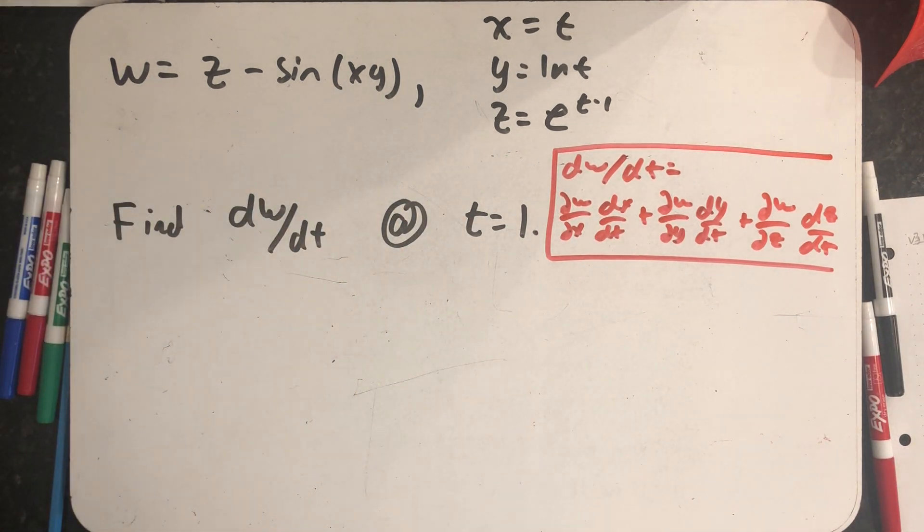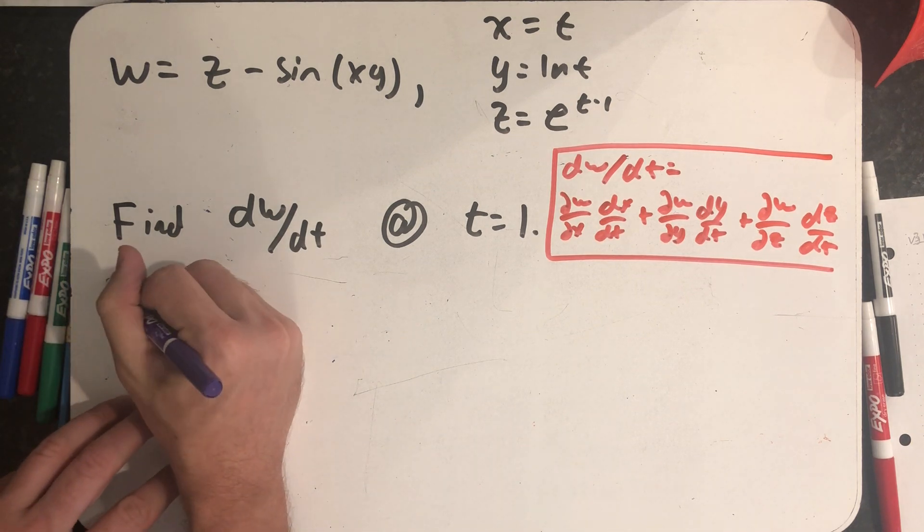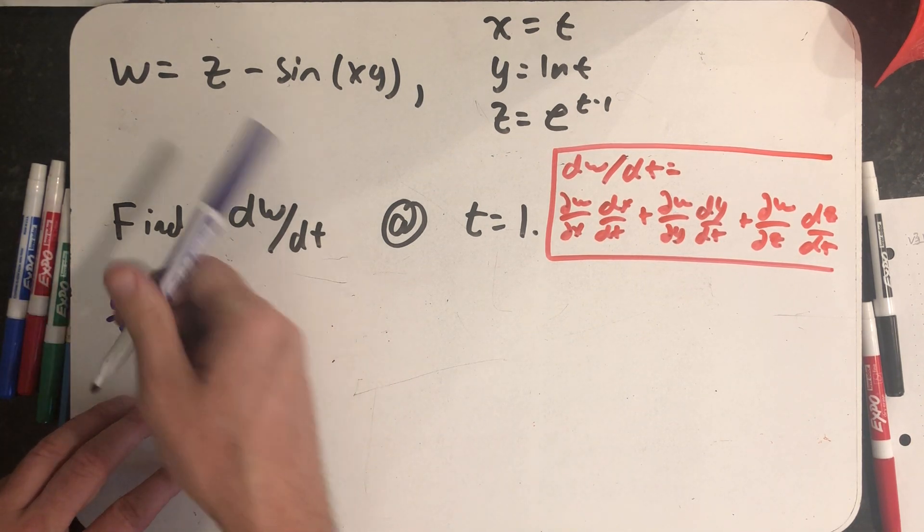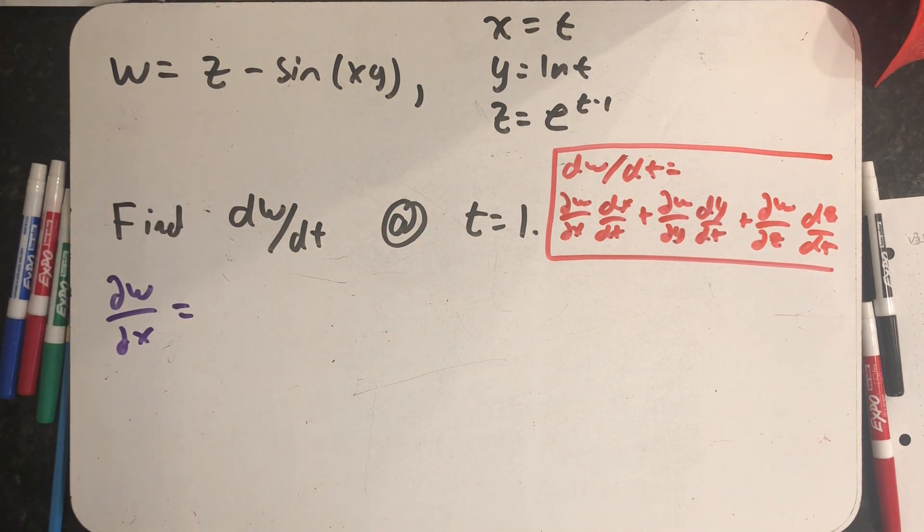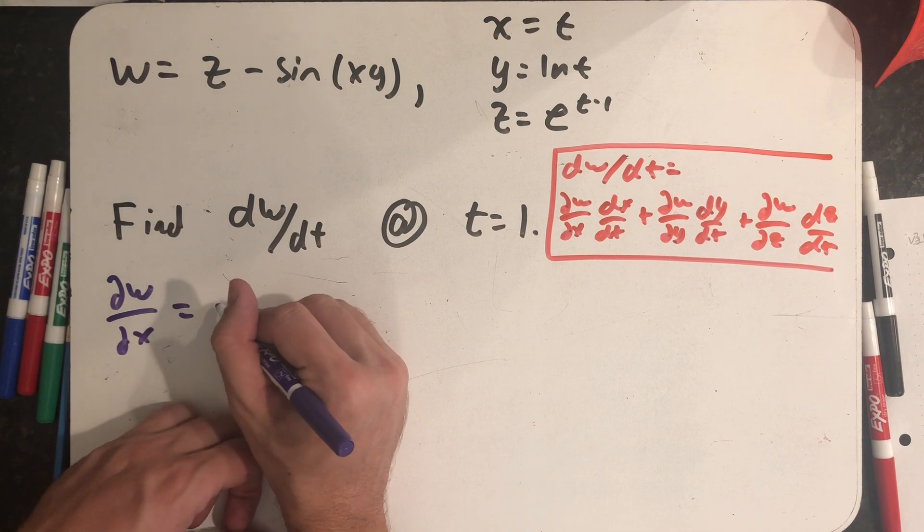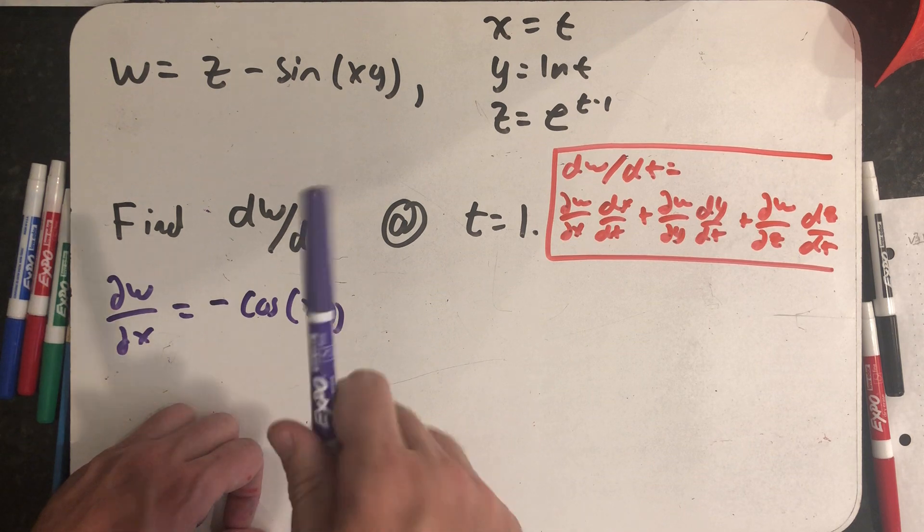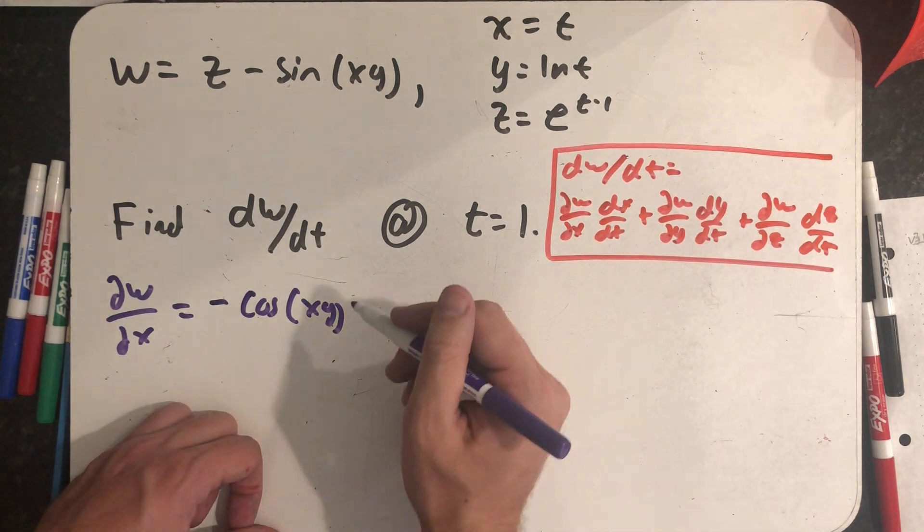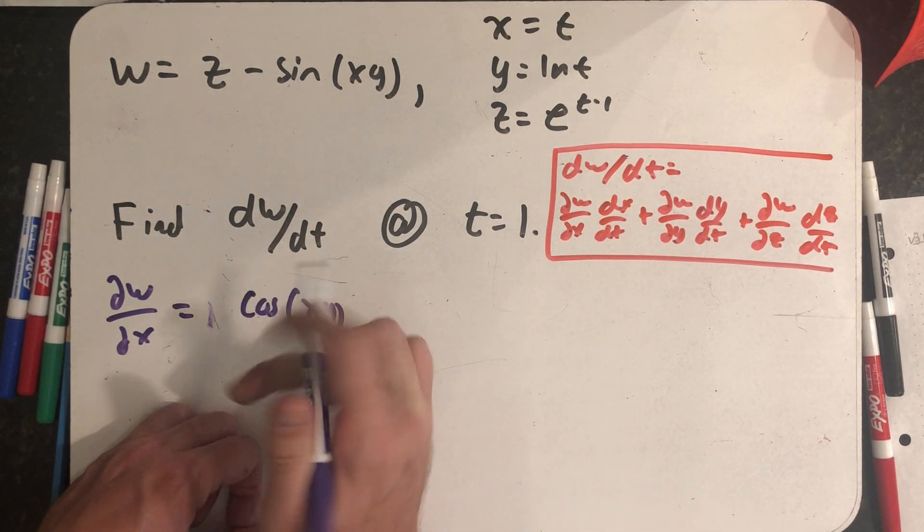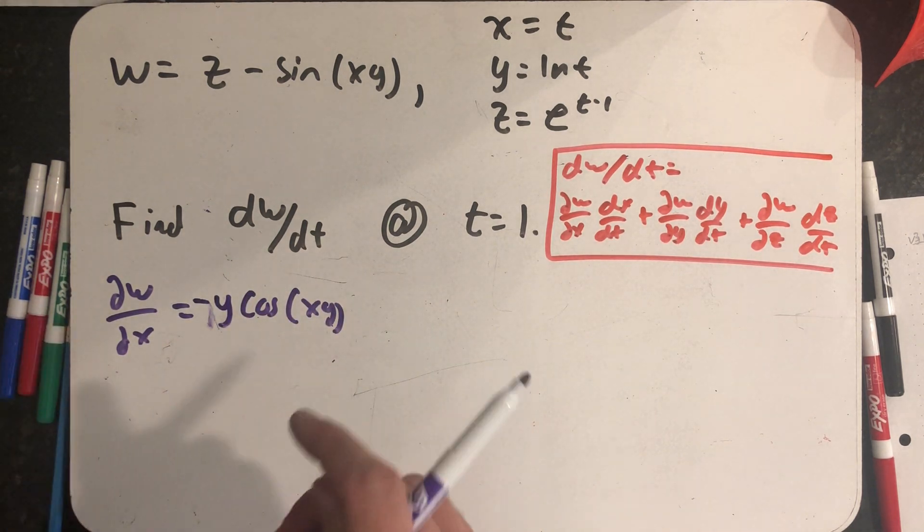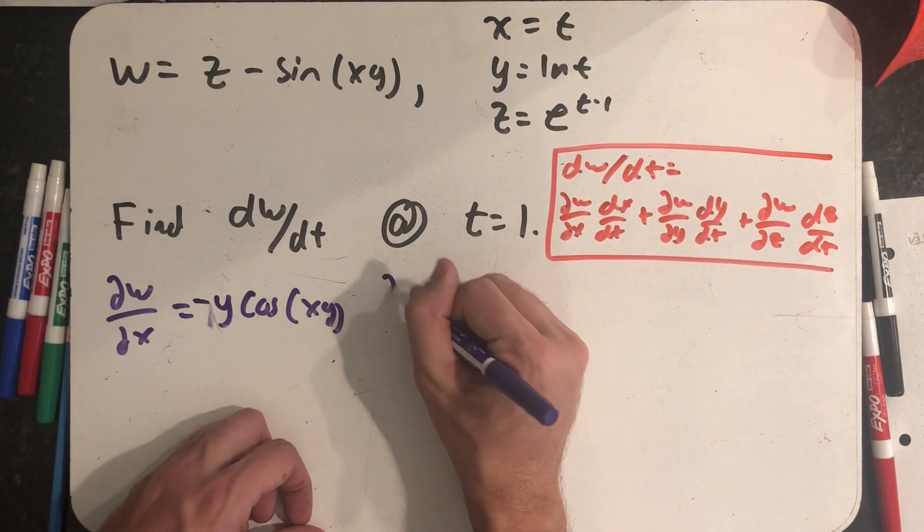So let's do that first. So I treat that like a constant and it goes away. The derivative of minus sine is minus cosine of xy. I need to take the derivative of xy with respect to x, so I should have a times y. I'm going to write that out front: minus y cosine of xy.